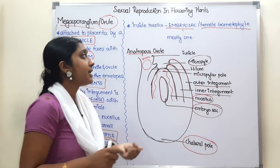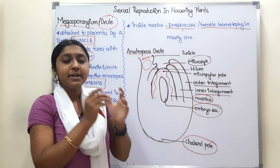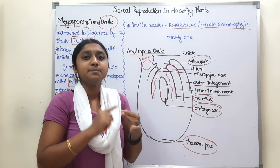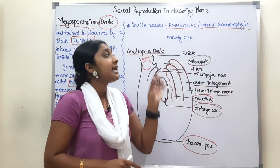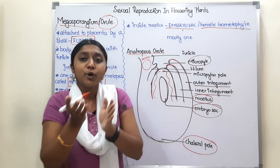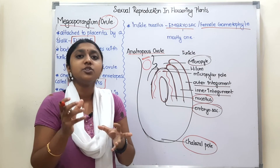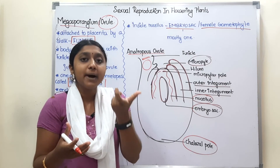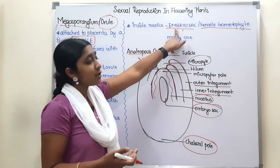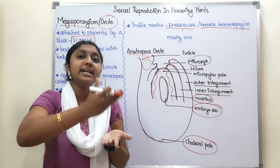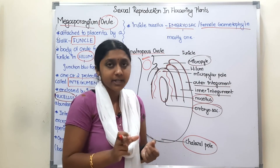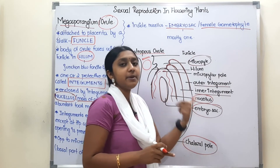The embryo sac has another name: female gametophyte. Gametophyte is the gamet-producing part of an organism. The gametes are produced in the embryo sac, so it is called the female gametophyte. That is why the embryo sac is called the female gametophyte.